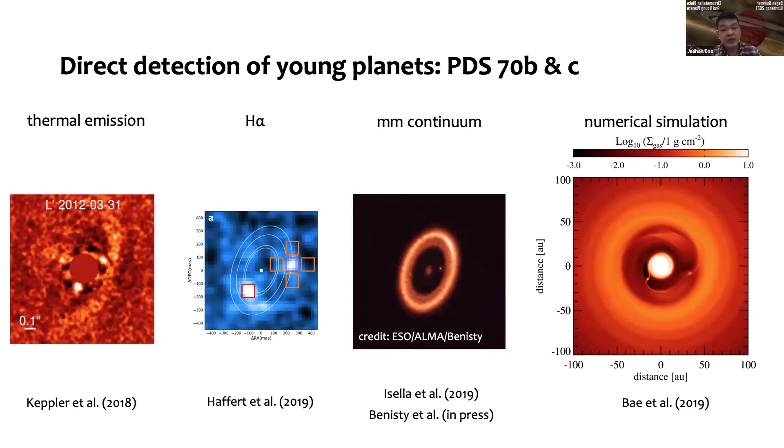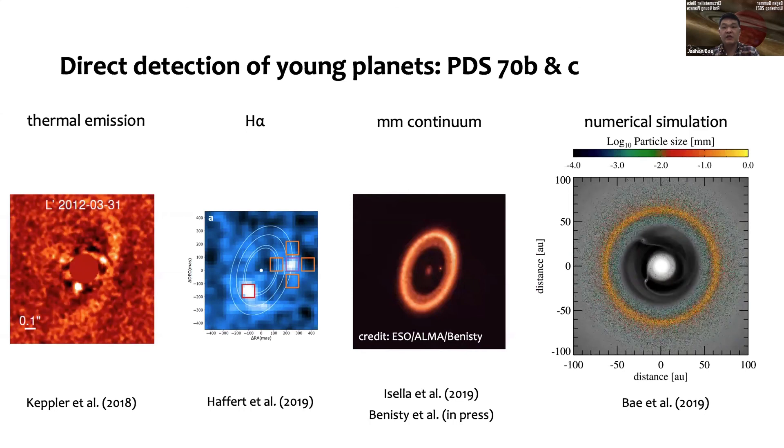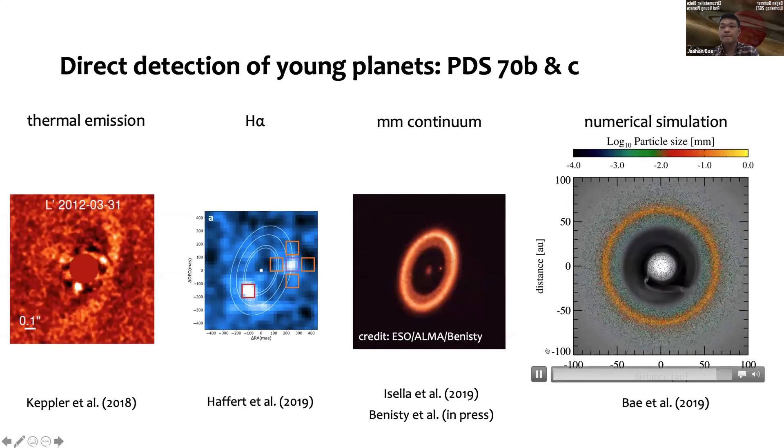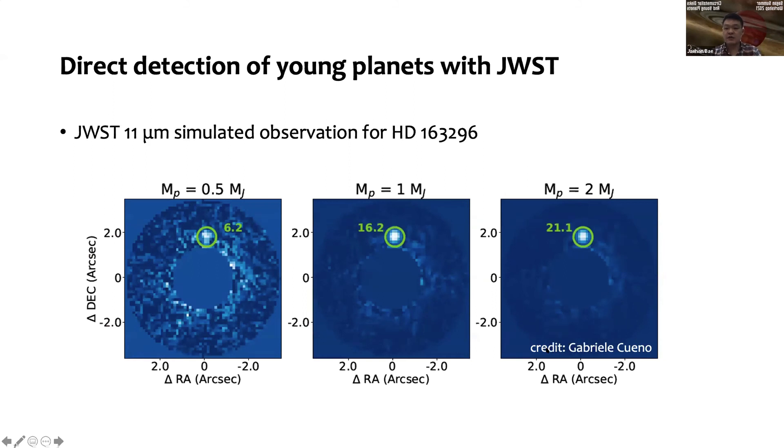Here's a great example for PDS 70. I recall yesterday someone asked what is the cause of the big cavity in the PDS 70 disk, and this is why: there are two giant planets. On the left, what you see is near-infrared detection—thermal emission coming from the two planets, PDS 70b and c. In the middle, H-alpha line emission is shown at the same location. This is millimeter continuum again—this disk has a big ring and a big cavity. You clearly see there's some dust emission at the location of planet c. This is what we are expecting from simulation and theoretical side.